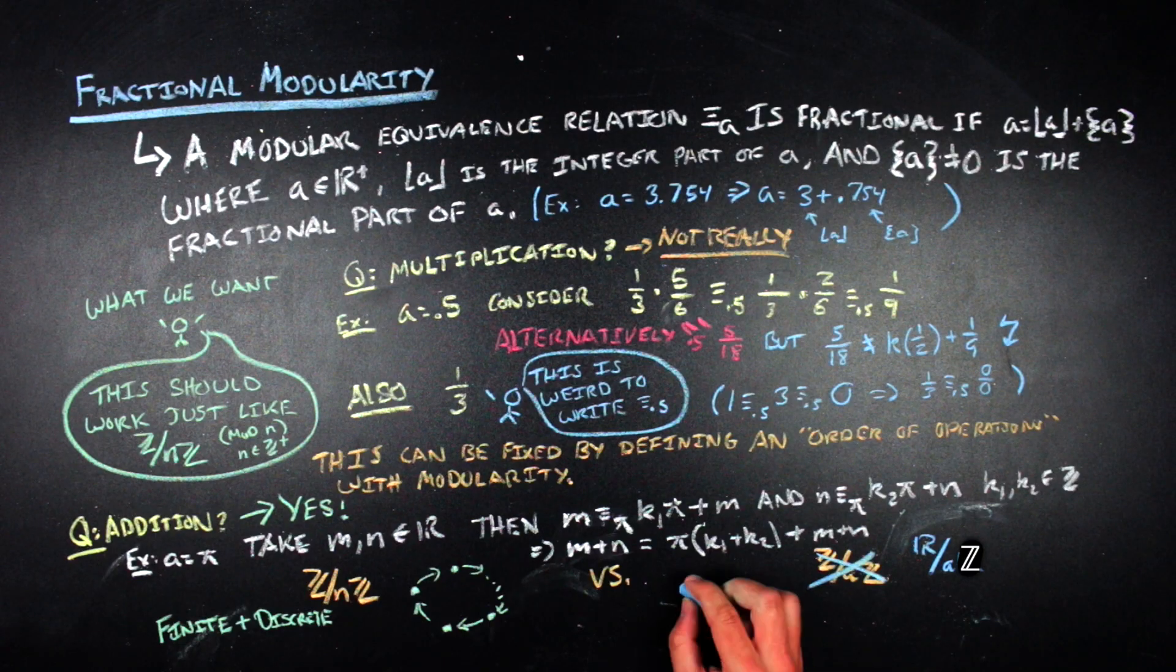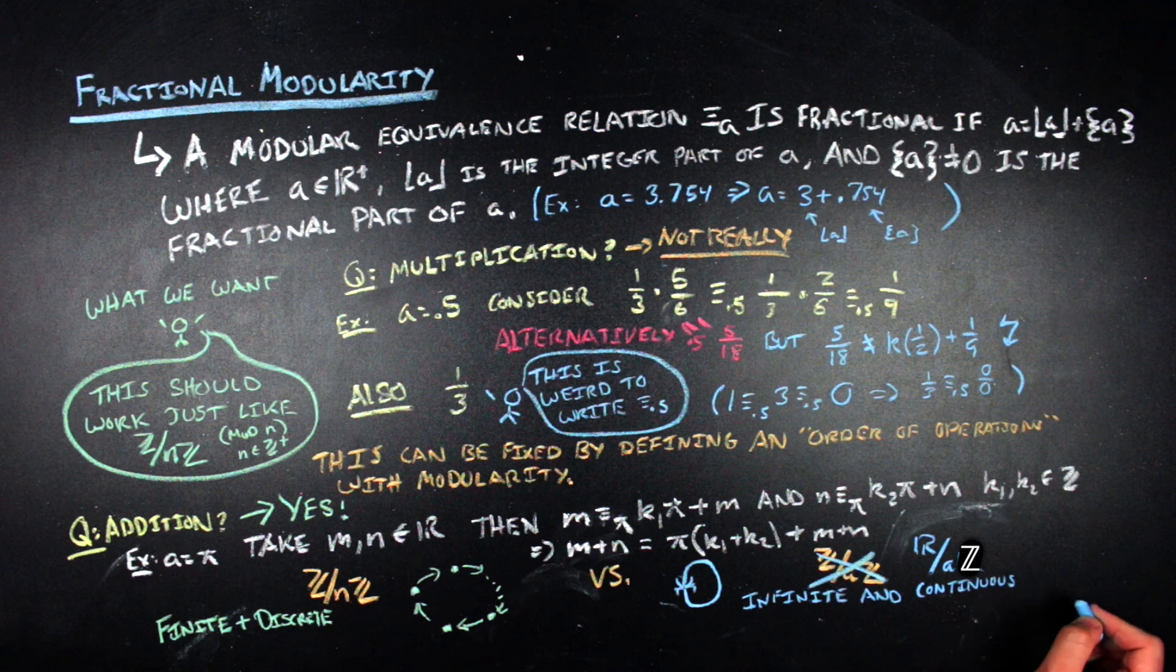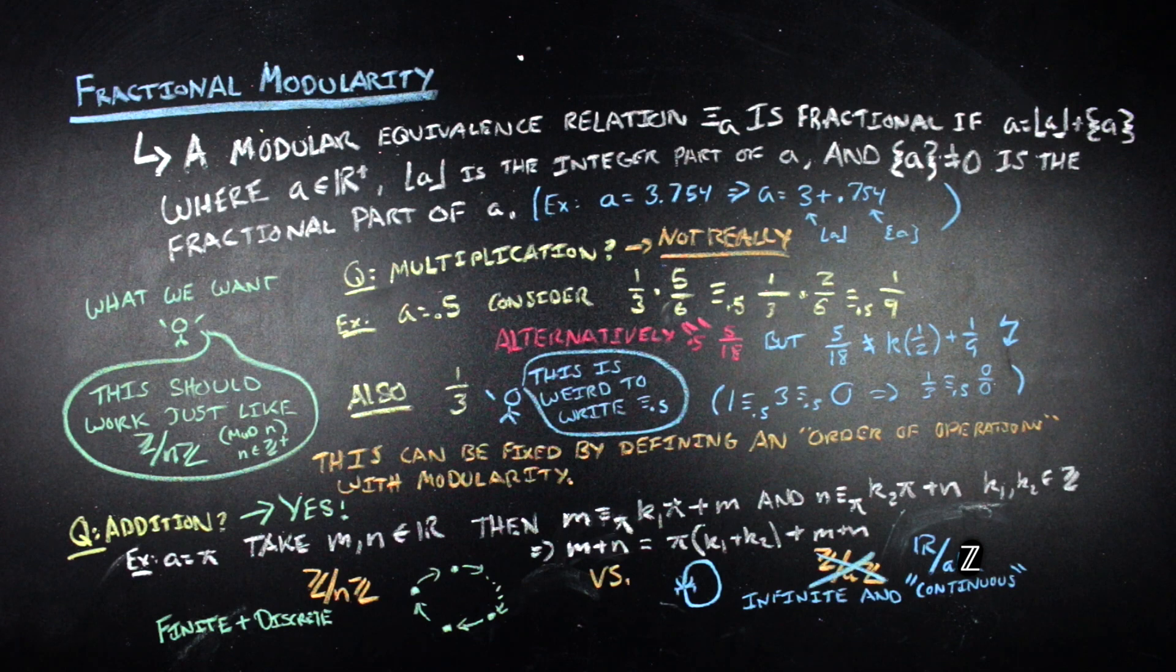And so when you're working R mod aZ, you're working basically in this infinite, connected, continuous thing. And what's great about infinite and continuous and connected things is that there's a lot of analysis type stuff that you can do there. And in particular, dynamics comes as something that might be worthwhile to think about on these particular spaces.